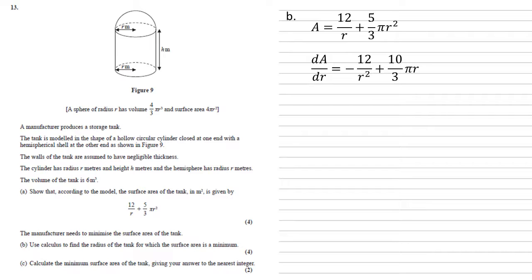So, dA by dr, to differentiate 12 over r, we remember that that's the same as 12r to the minus 1. So, multiply that minus 1 down, take 1 off the power, so it becomes minus 2. So, written as a fraction, that's minus 12 over r².